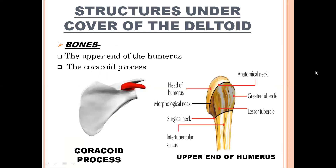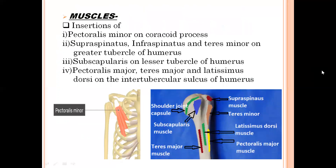Now I will briefly revise the actions of all muscles. For abduction: supraspinatus from 0 to 15 degrees, and middle or multipinnate fibers of deltoid from 15 to 90 degrees. For adduction: subscapularis and teres major. For lateral rotation: infraspinatus, teres minor, and posterior fibers of deltoid. For medial rotation: anterior fibers of deltoid, subscapularis, and teres major. For flexion: anterior fibers of deltoid. For extension: posterior fibers of deltoid. Now, what structures are present under the cover of deltoid? Bones: first, upper end of humerus; second, coracoid process of scapula.